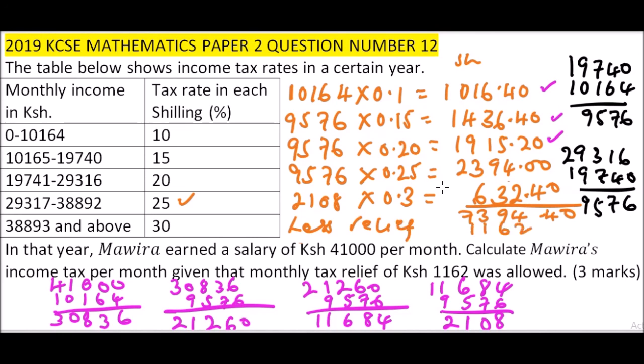After subtracting the tax relief of 1,162, this gives you 6,232.40 shillings. So that is the tax that Mavera will have paid that particular month. That is how you work out such kinds of questions. If you want more practice you can go to commercial arithmetic in Form 3. Thank you for watching.